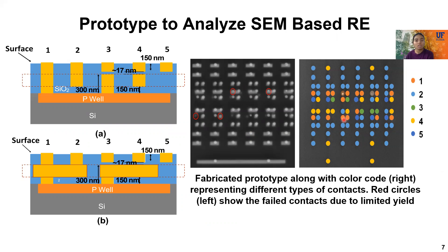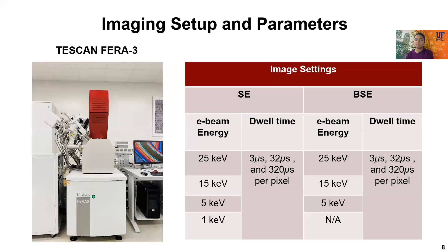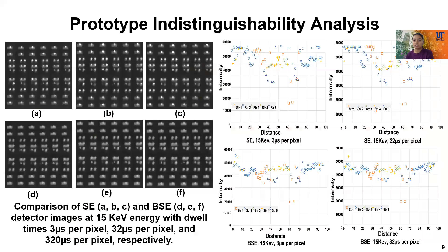We want to do ACM image analysis to prove that an attacker cannot distinguish the camouflage gates, resulting in failure of reverse engineering. To take the images, we used test conditions in different operating conditions as shown in the table. After taking the images, we analyzed them to prove prototype indistinguishability. From the naked eye, the images taken in different conditions look the same. We also did quantitative analysis showing intensity versus distance graphs. The intensities of the prototype contacts overlap so much that it is not possible to tell which ones are real and which ones are dummy contacts. This supports our claim.